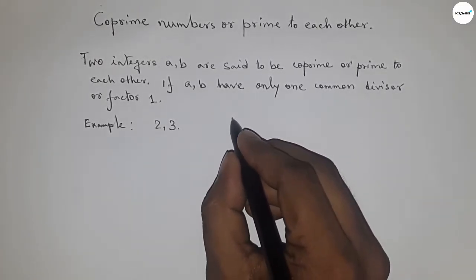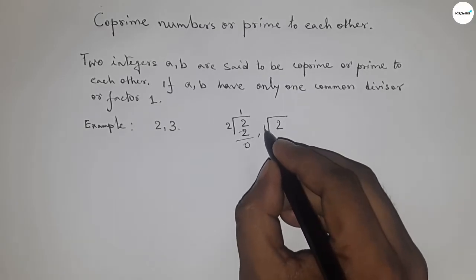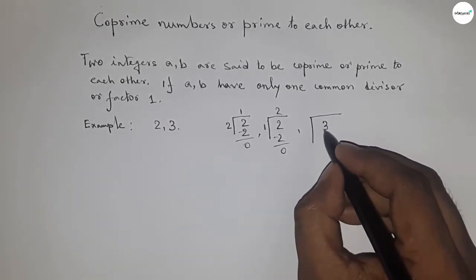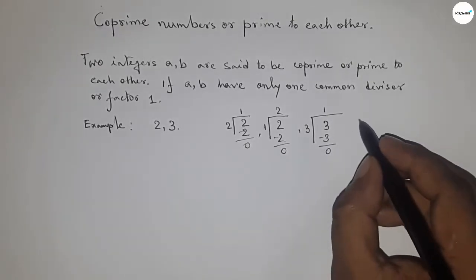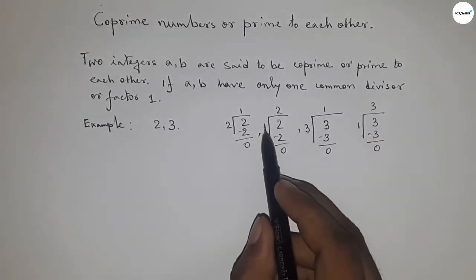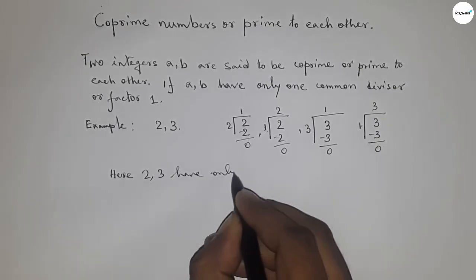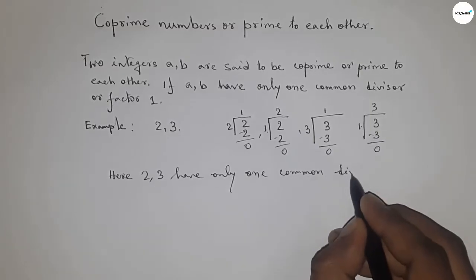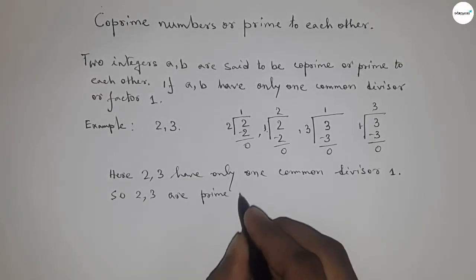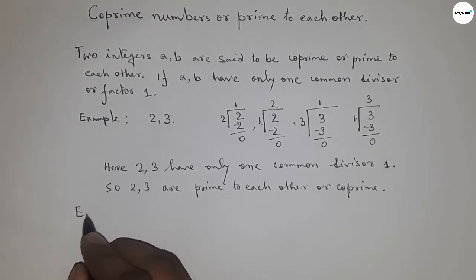First, taking the example of 2 and 3 and checking whether they are co-prime integers or not. 2 can be divided by 2 itself and also by 1, so 2 has only 2 divisors. 3 can be divided by 3 itself and also by 1. From both, we get only one common factor, which is 1. So 2 and 3 satisfy the definition of co-prime — they are co-prime integers.